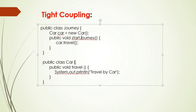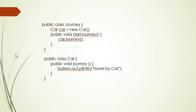It means if any changes in the Car class require changes to the Journey class. For example, if the Car class changes the travel method to journey method, then you have to change the start journey method.